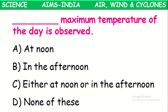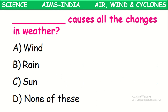Maximum temperature of the day is observed in the afternoon time. The main cause for all the changes in the weather is the sun — due to the sun, all these changes are occurring in the weather.